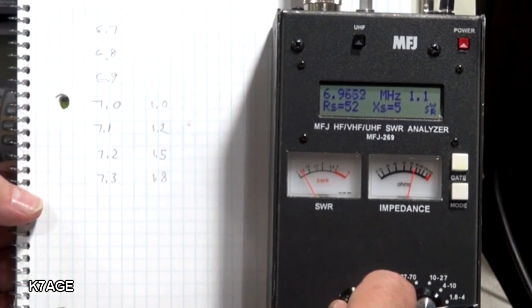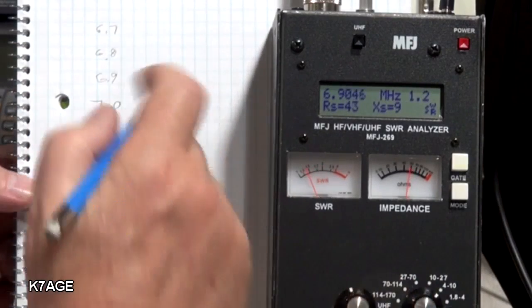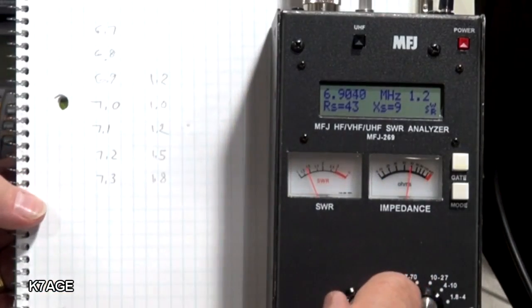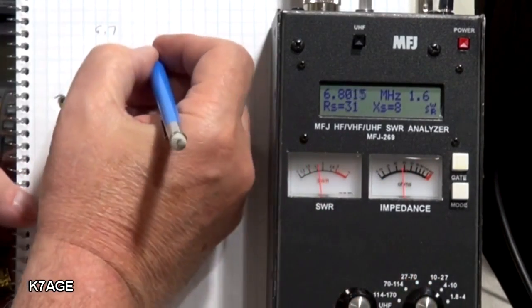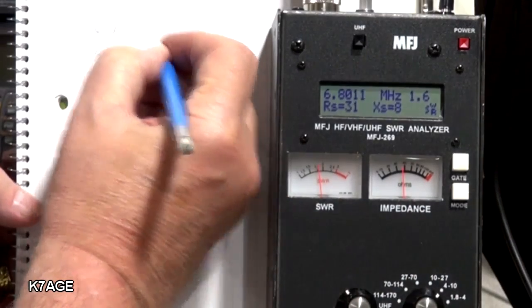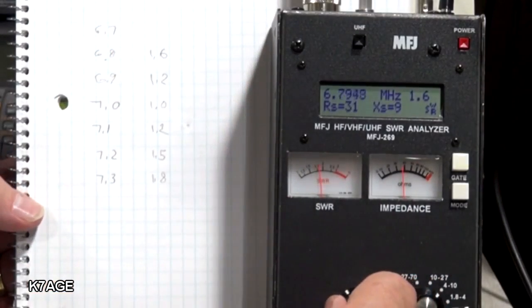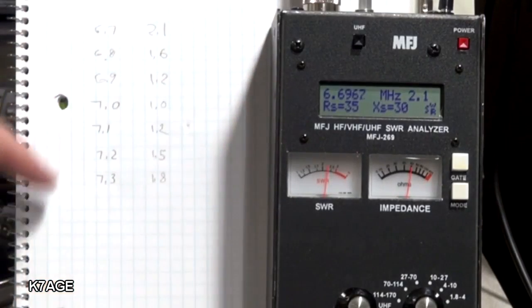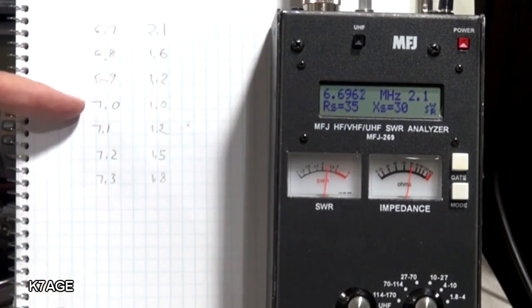Looking for 690. That's 1.2. On the 6.8. 1.6. 6.7. 2.1. As you can see the antenna is resonant at 7 MHz.